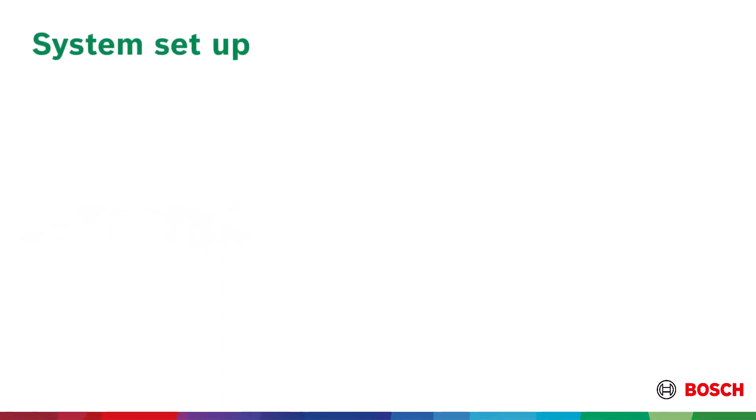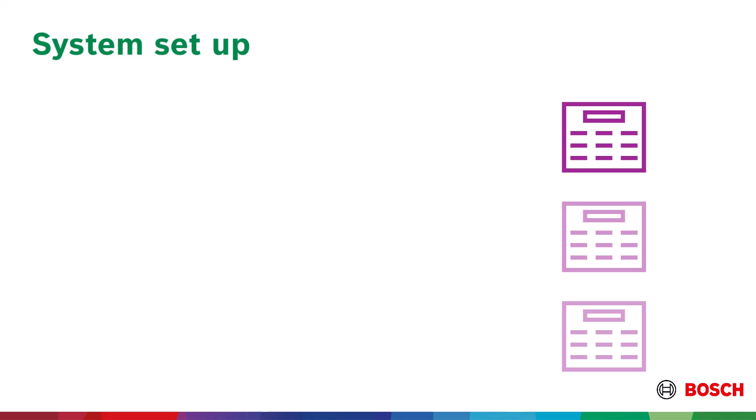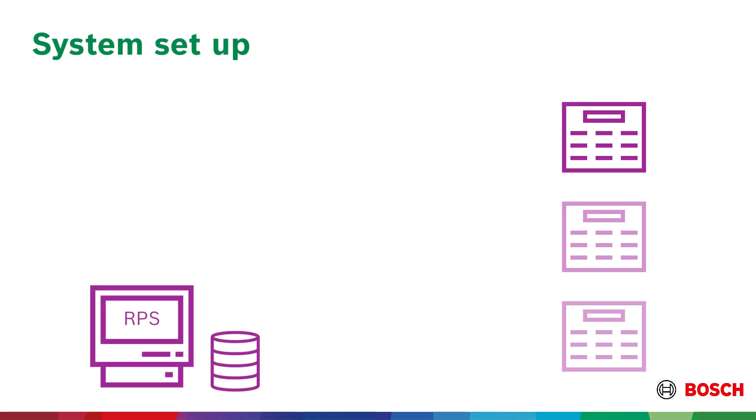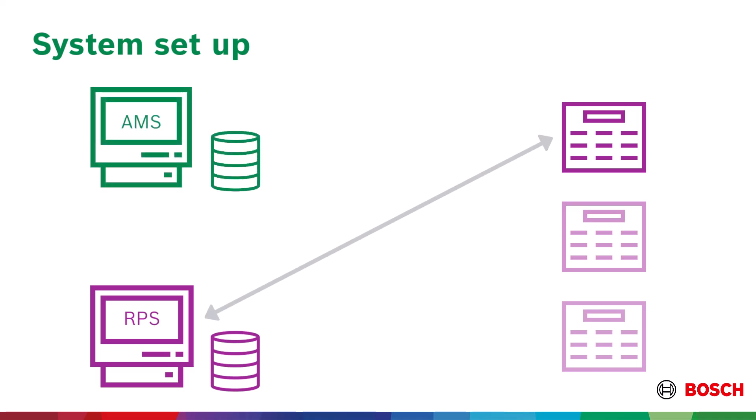System setup: B&G series intrusion panels are compatible with this integration. The intrusion panels themselves are configured and updated as previously through their remote programming software, RPS. AMS continually reads from RPS and displays the panels that are in it. AMS contains dialogues to create and assign authorization profiles and manage panel users.